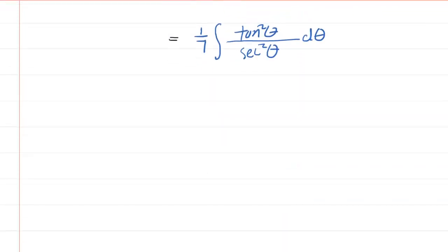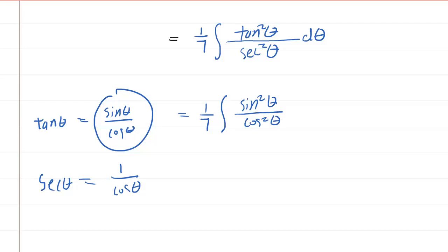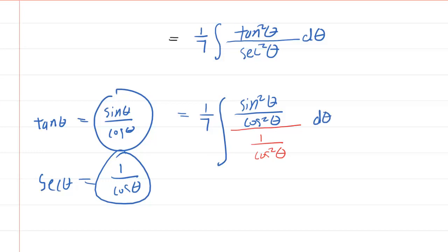We kind of have tan squared over sec squared. Recall that tangent of theta is sine of theta over cosine theta, and secant of theta is 1 over cosine of theta. Let's rewrite tan squared as sine squared of theta over cosine squared of theta, and then we are dividing that by 1 over cosine squared of theta. The factor of cosine squared in the denominator and the cosine squared in the other denominator cancel each other out, leaving us with the integral of sine squared of theta d theta.